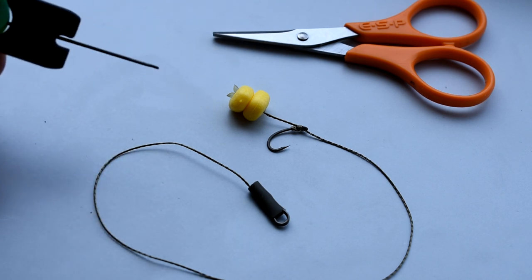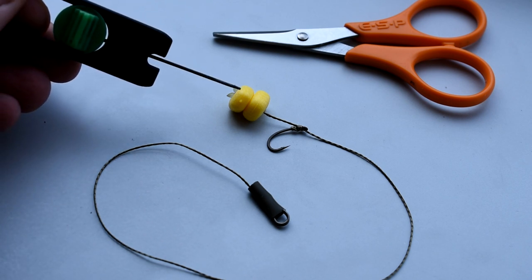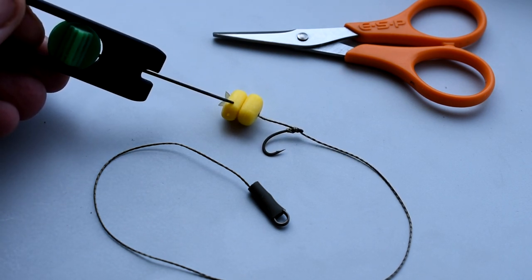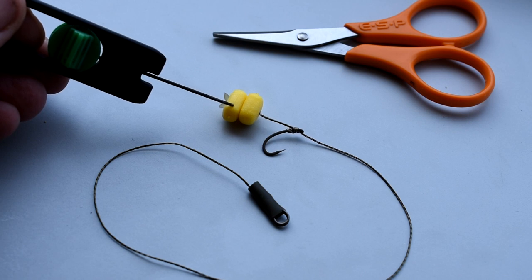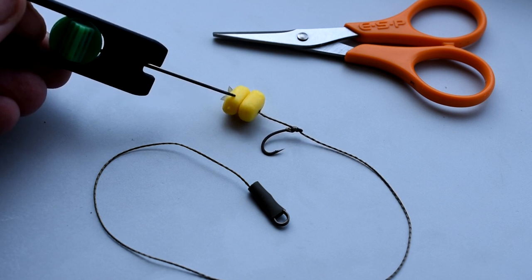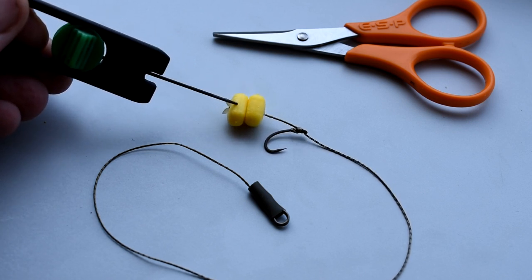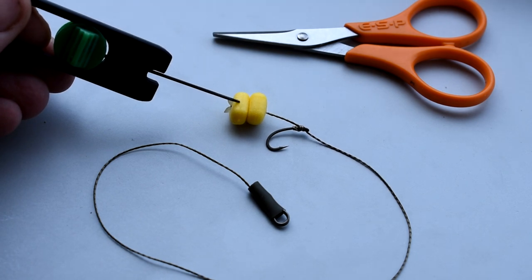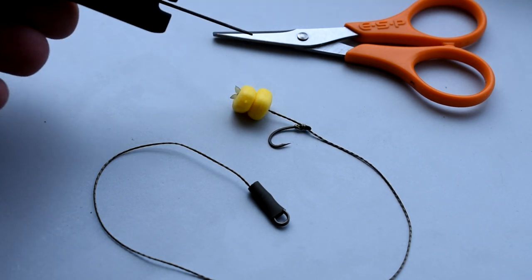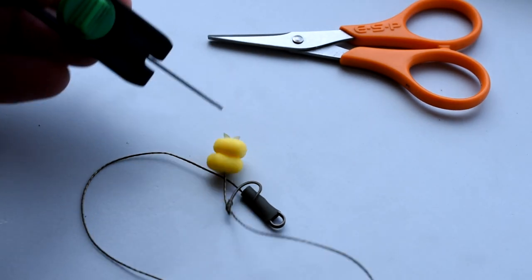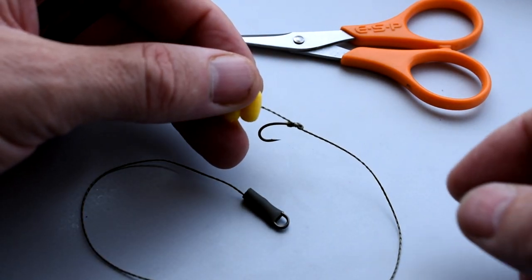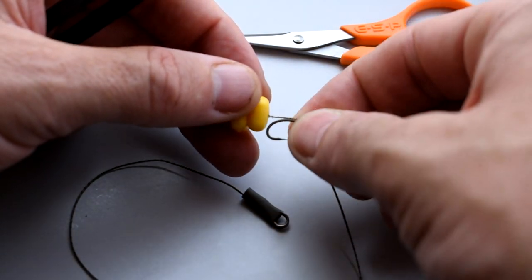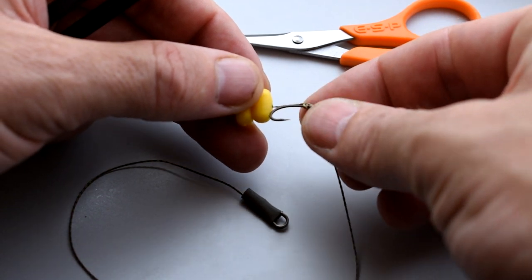I've got two grains of corn on there, two grains of pop-up Enterprise fake corn, just there for rig tying so you can get the dimensions of the rig right. I've made the hair long enough so that it just touches the bend of the hook when it's straight.